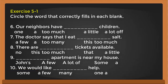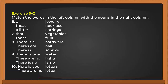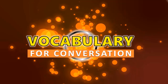Move on to Exercise 5.2: match the word in the left column with the nouns in the right column. For example, 'one' is for singular nouns — so 'one bottle'. 'Four' is for plural — so 'four bottles'. Complete exercises two through ten, then check the answers. That's all about the singular, plural, and non-count nouns review. I hope you have a better understanding of speaking with singular, plural, and non-count nouns, and I'll see you in the next video.